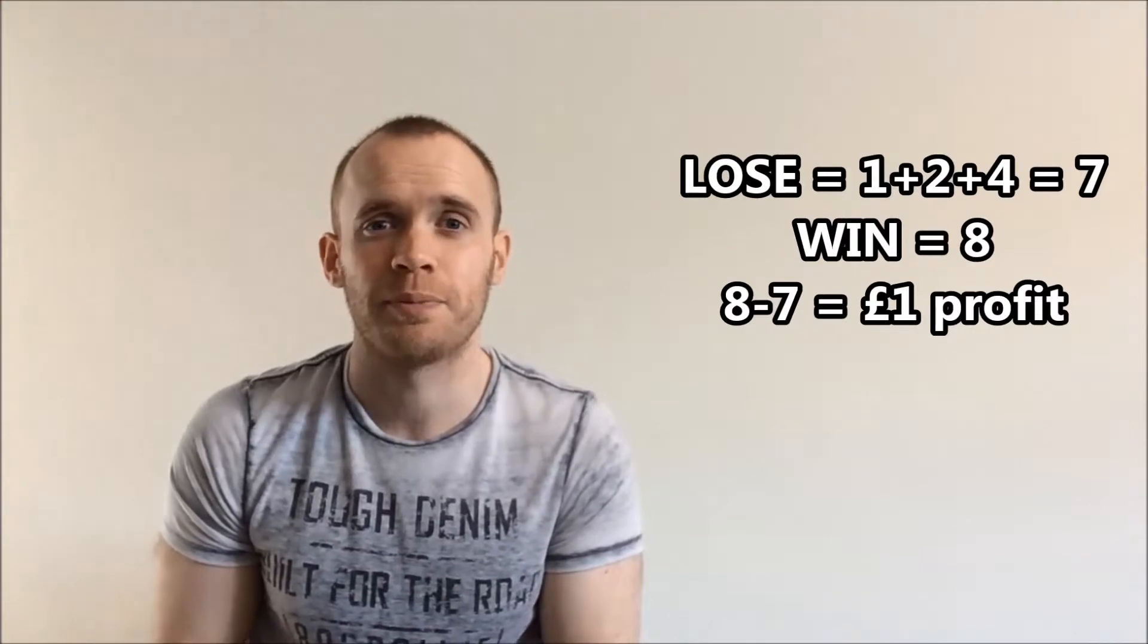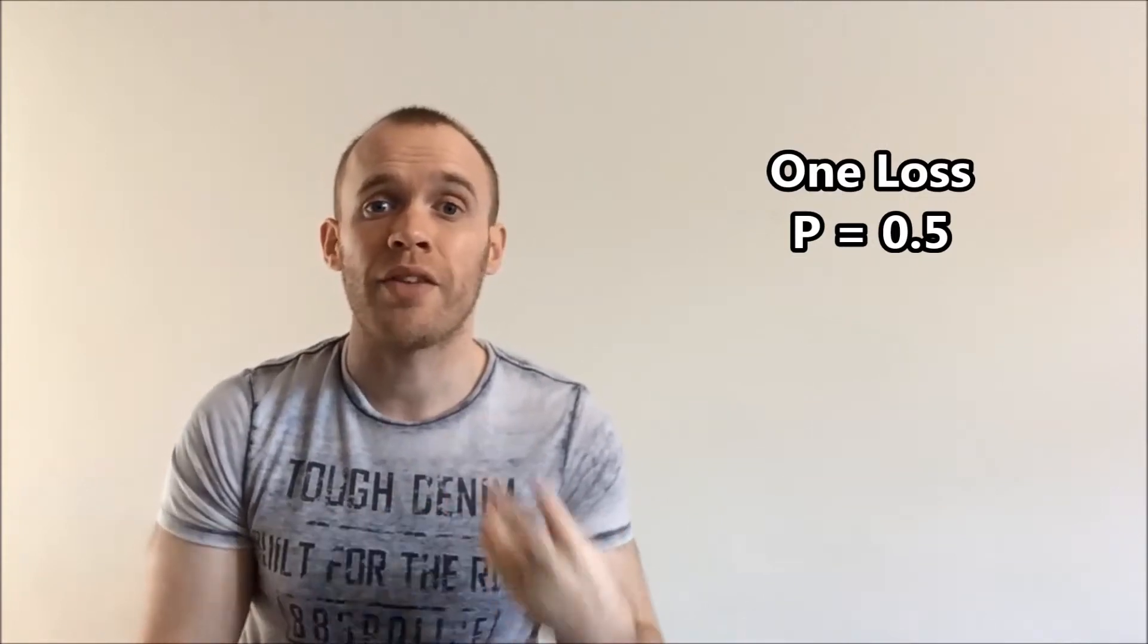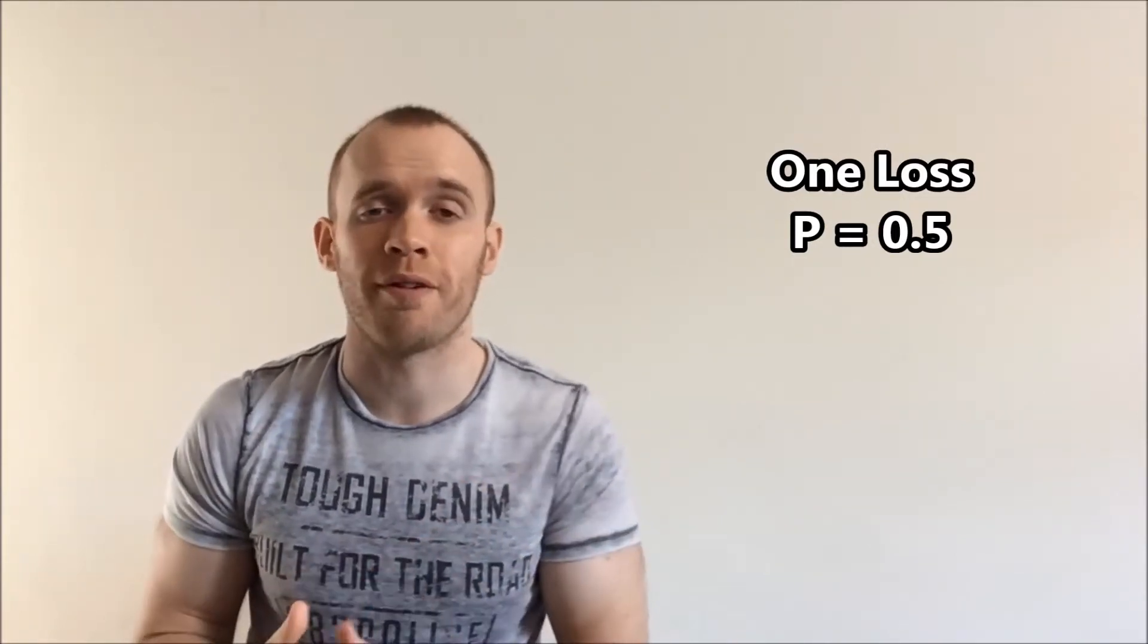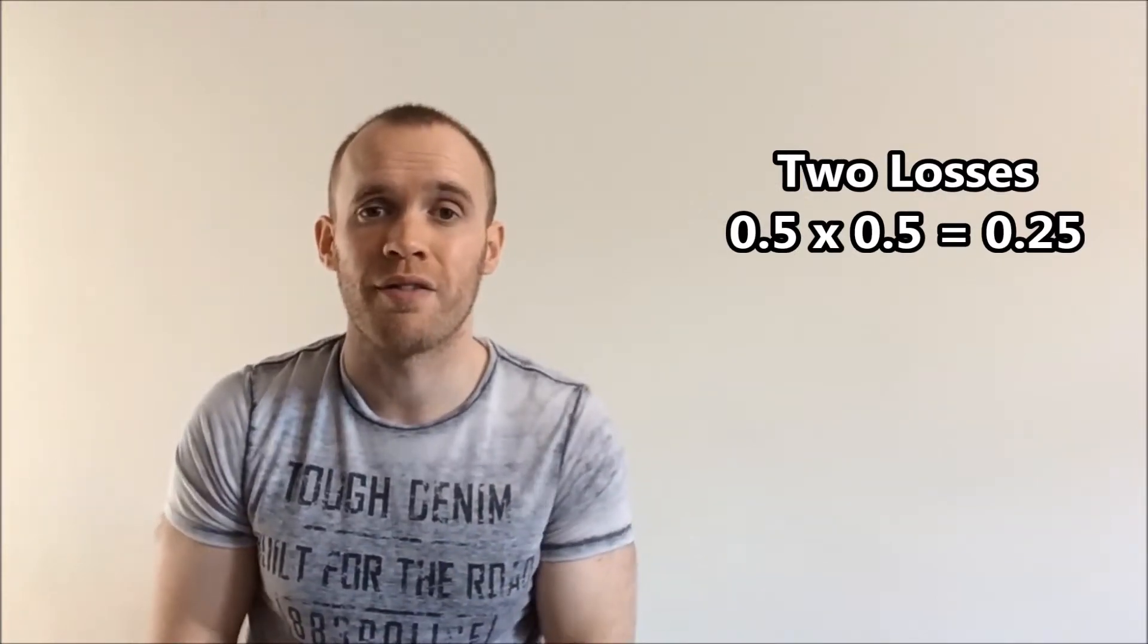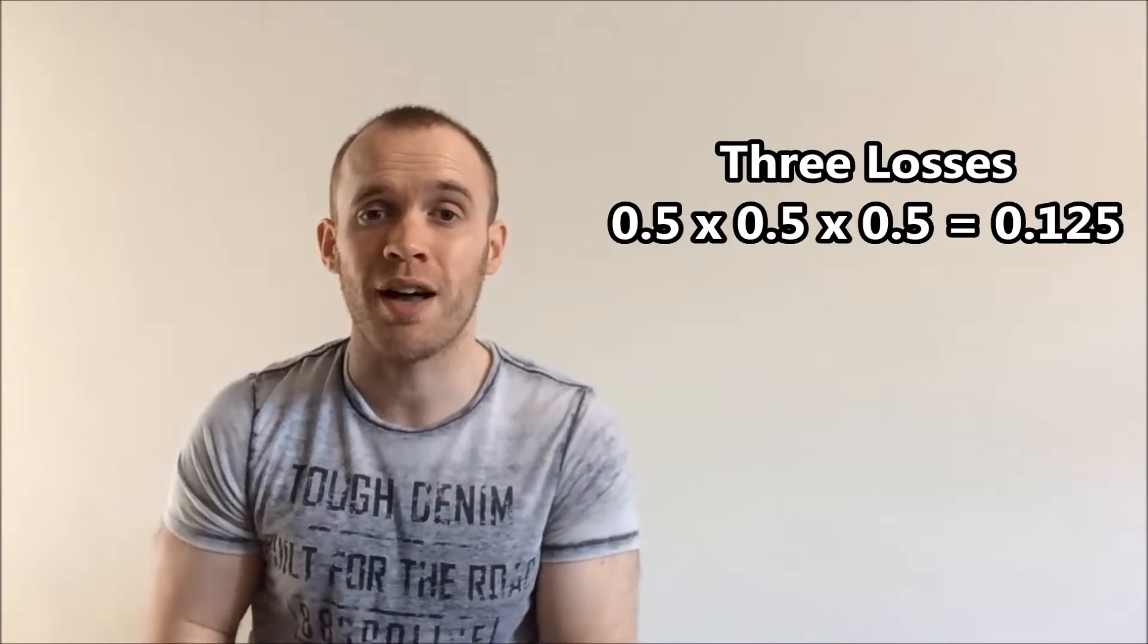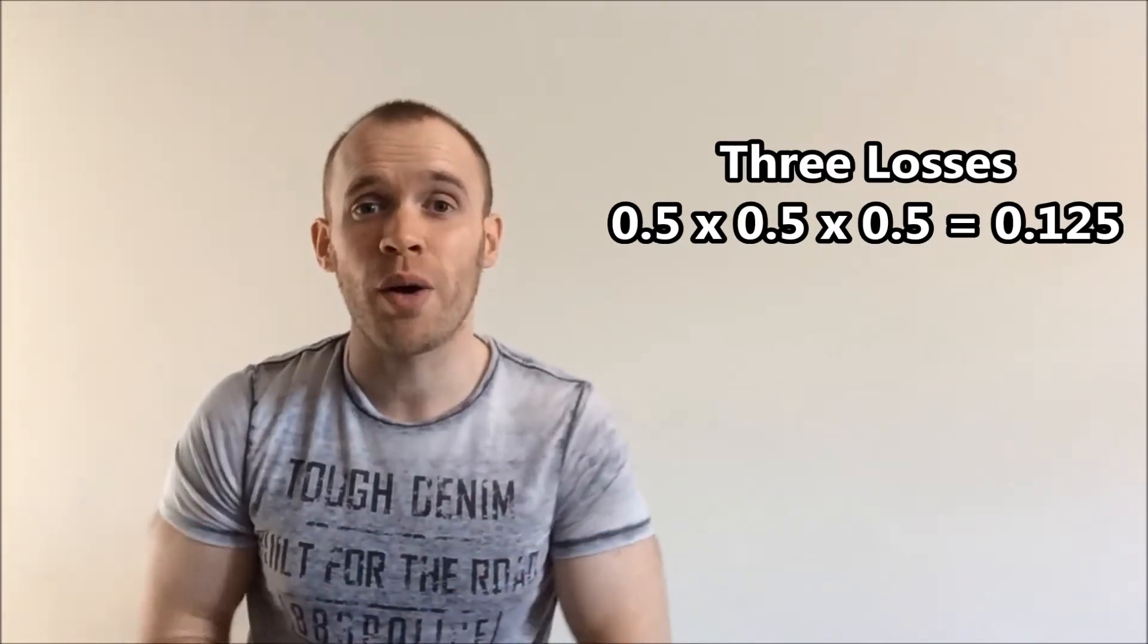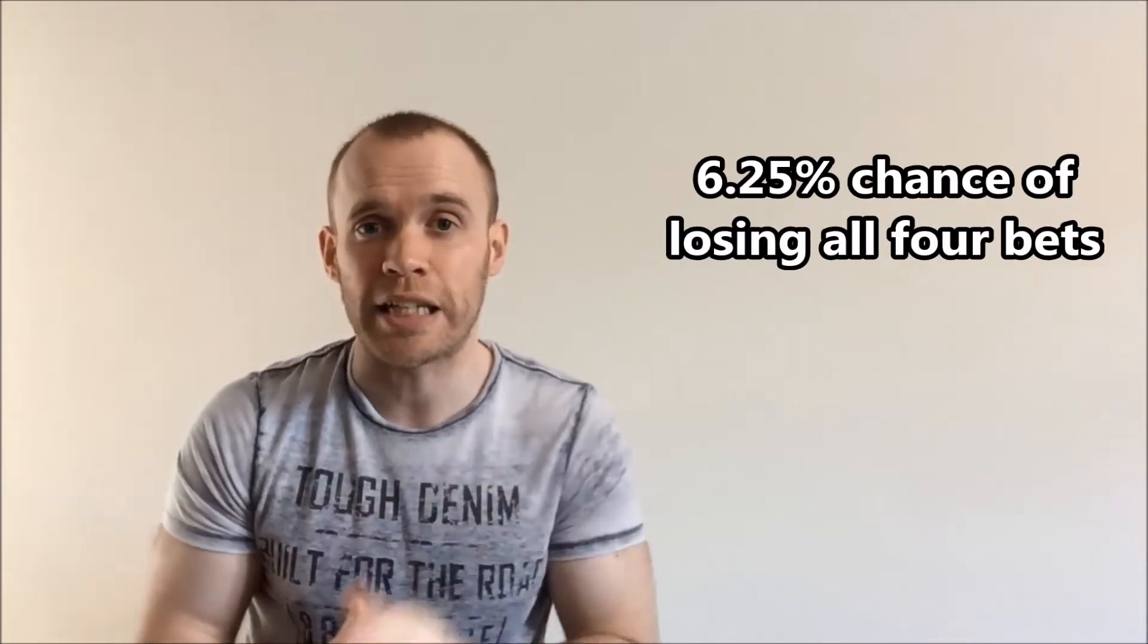The chance of losing your first bet was 50% or 0.5 in terms of probability. To work out the odds of losing twice, it's 0.5 times 0.5 which is 0.25. Third time, multiply again to get you to 0.125. And to lose four in a row is 0.0625 - in other words, a 6.25% chance that you lose four times in a row.